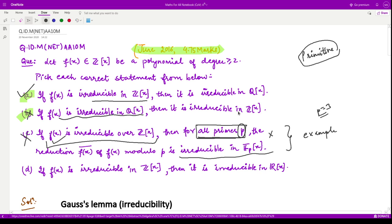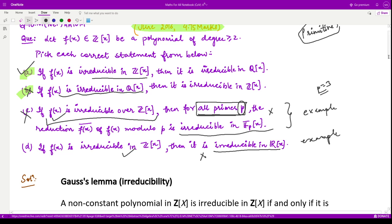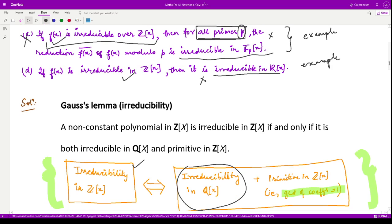Let us come to option D. In option D, they are asking if f is irreducible in Z[x], then it should also be irreducible in R[x]. So here also we need, if we are able to find an example for which the first condition holds but the second doesn't, we are done and the option would be incorrect. If we are not able to find such an example, that means this condition is true.